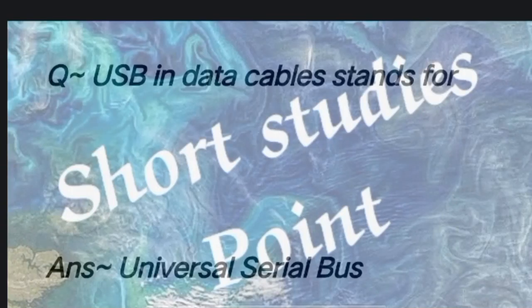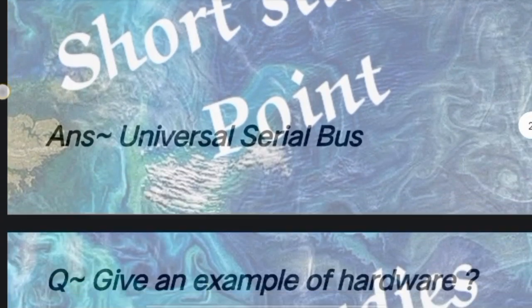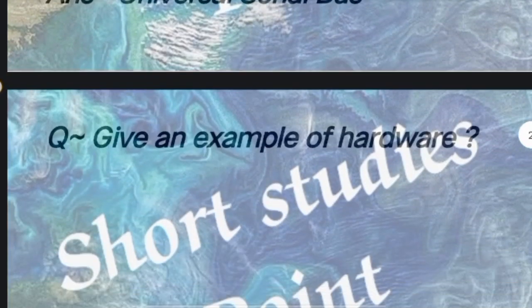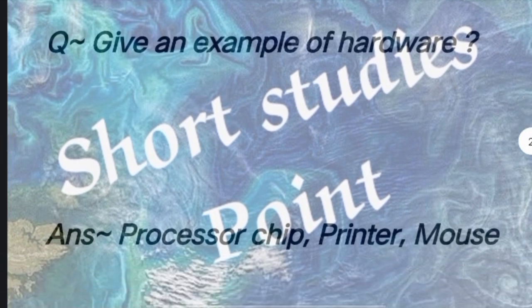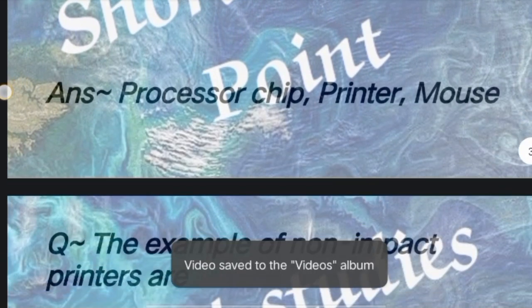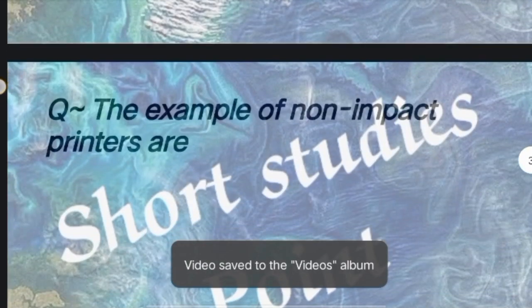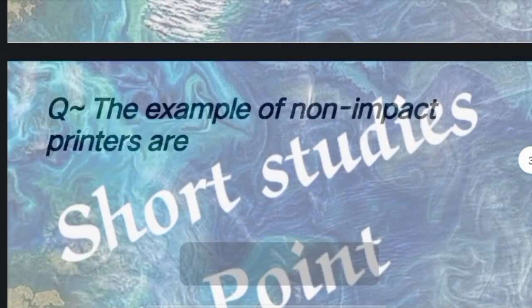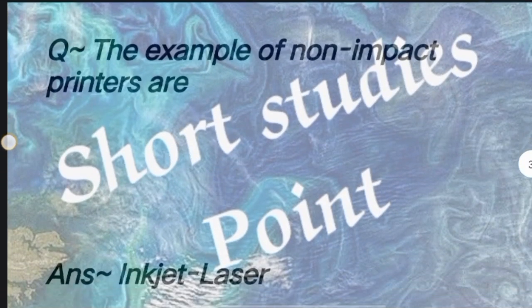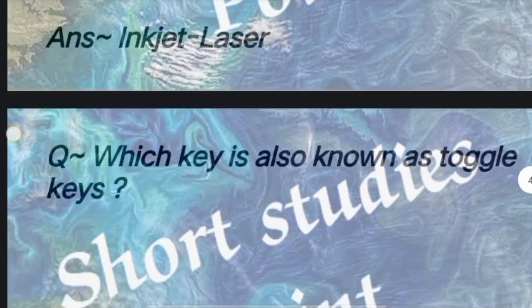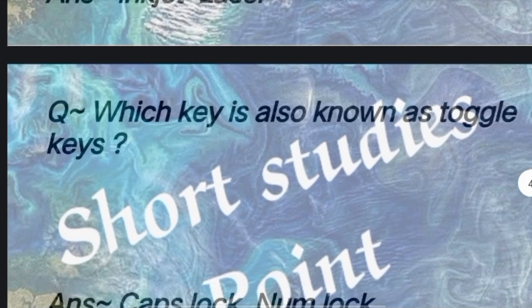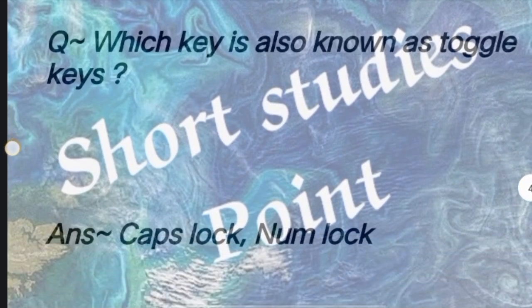Question: What does USB stand for? Answer: Universal Serial Bus. Next question: Give an example of hardware. Answer: Processor chip, printer, mouse. Next question: What are examples of non-impact printers? Answer: Inkjet, laser.